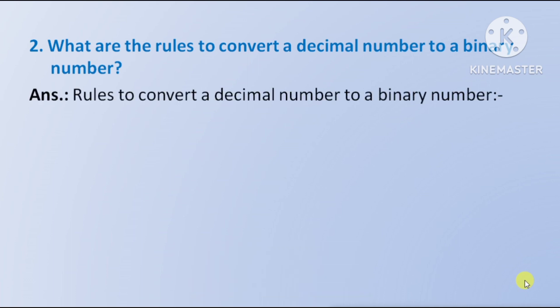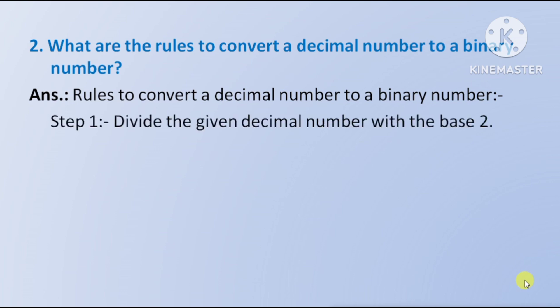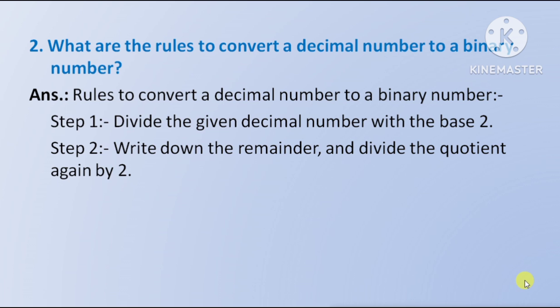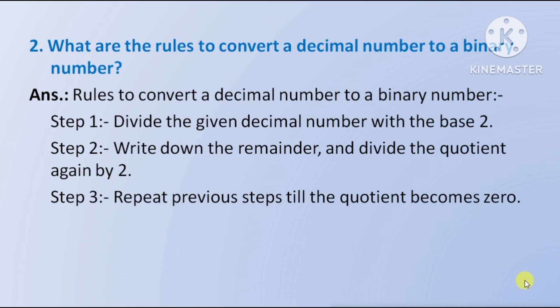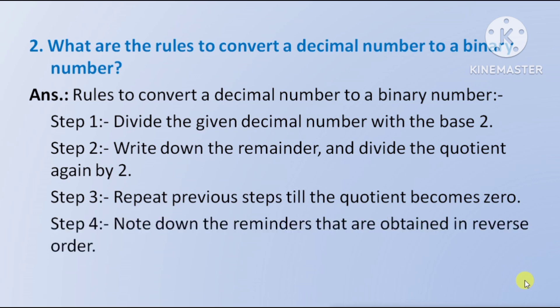Answer: Step 1 — divide the given decimal number by the base 2. Step 2 — write down the remainder and divide the quotient again by 2. Continue until the quotient is zero, then write the remainders in reverse order. That number is your binary number.